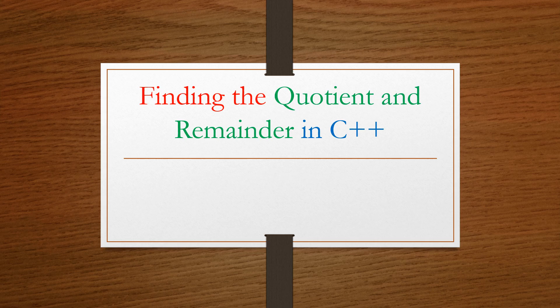Hello everyone, welcome to Dennis Simplifies. Today, we are going to find the question that is the number of times the divisor goes into a dividend as well as the remainder without dividing in C++. But as usual, we are first going to write the algorithm and then we'll use the algorithm to model our code in C++. So, let's simplify.